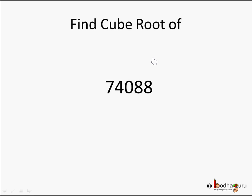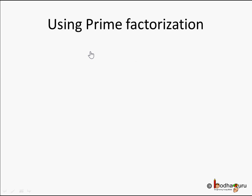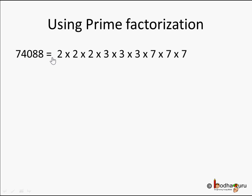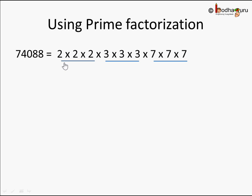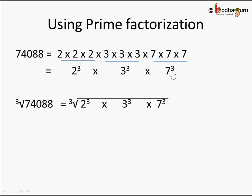Now let's take another example and find the cube root of 74088 using prime factorization. We represent 74088 as 2 into 2 into 2 into 3 into 3 into 3 into 7 into 7 into 7. We bundle each group of three same numbers: 2 into 2 into 2, then 3 into 3 into 3, then 7 into 7 into 7. We can write these as cubes: 2 cubed, 3 cubed, and 7 cubed.